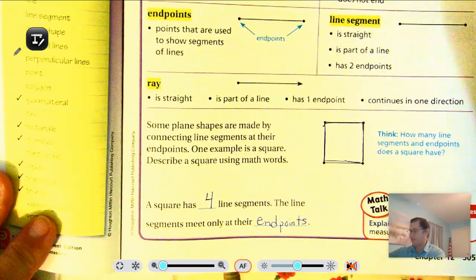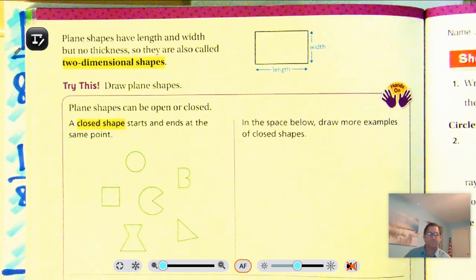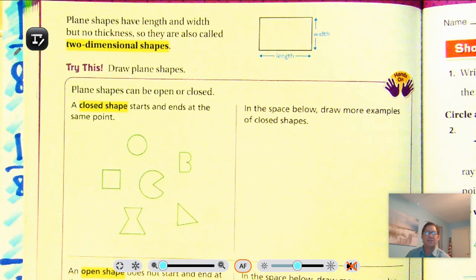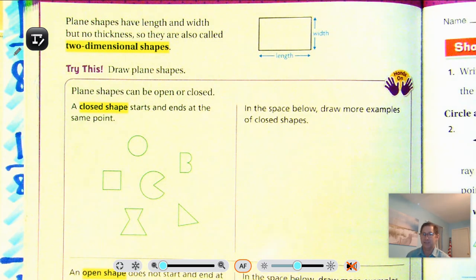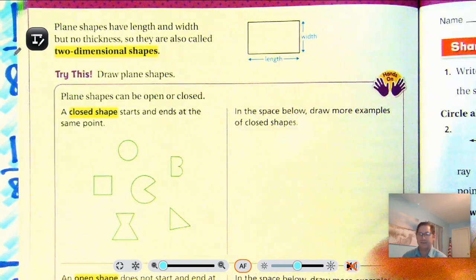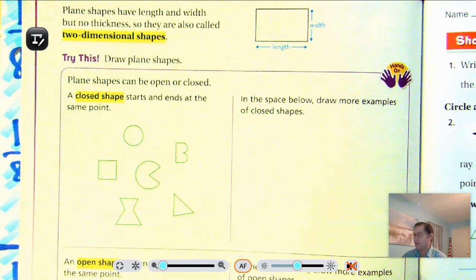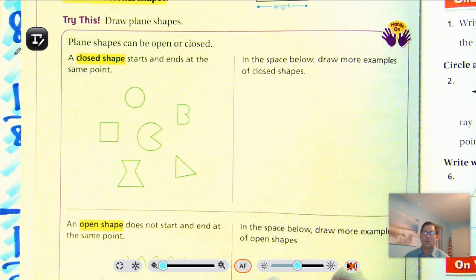On page 506: plane shapes have length and width but no thickness, so they are also called two-dimensional shapes. They're not coming up out of the page — they only have length and width, not height. Now let's draw some plane shapes. Plane shapes can be open or closed.